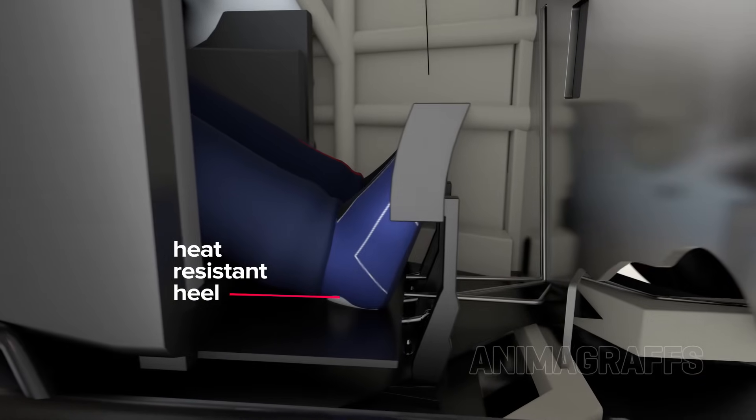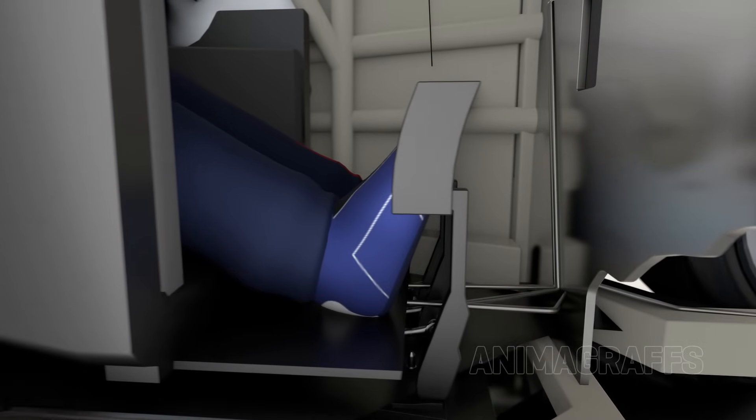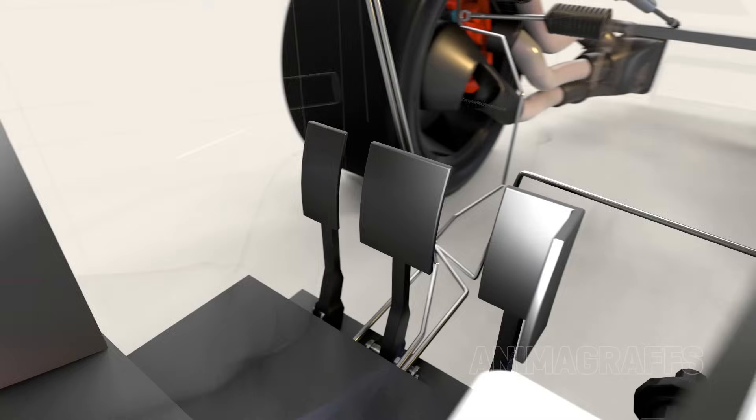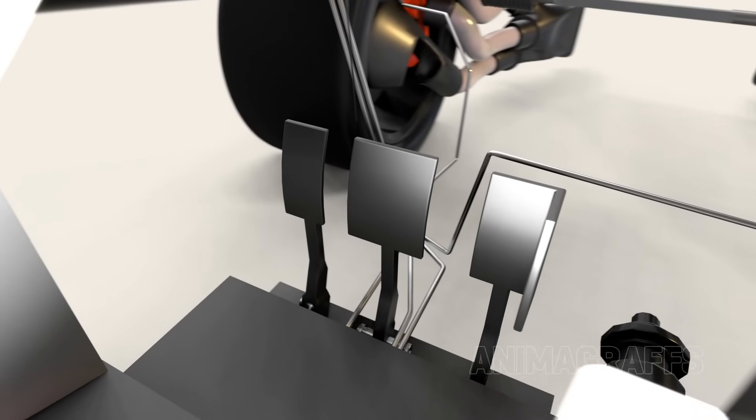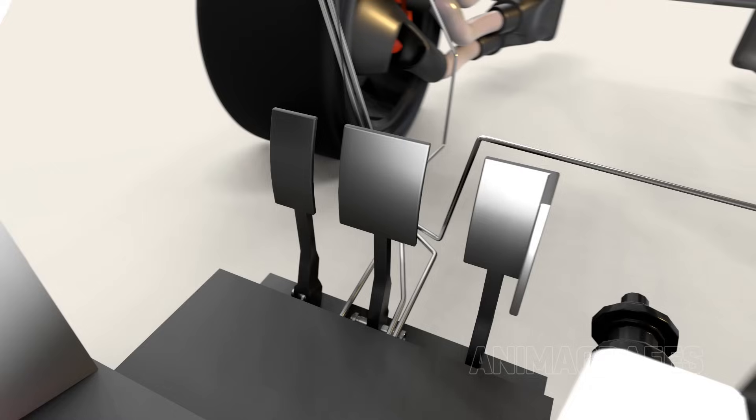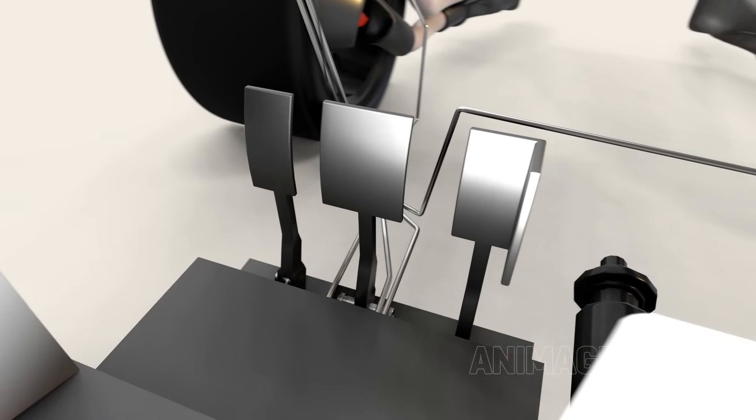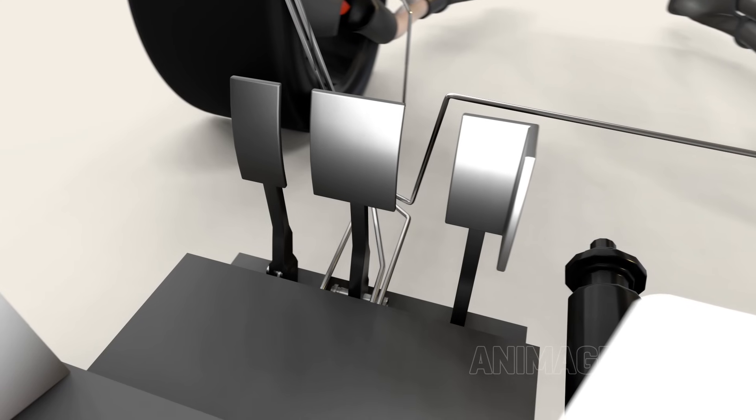Driver's shoes may have heat-resistant heel guards as a barrier to intense exhaust heat underneath the cockpit floor. The pedal box consists of a traditional three-pedal manual setup, with the gas pedal on the right, the brake pedal in the middle, and the clutch pedal on the left. Once in motion, the clutch isn't needed for further gear shifting.